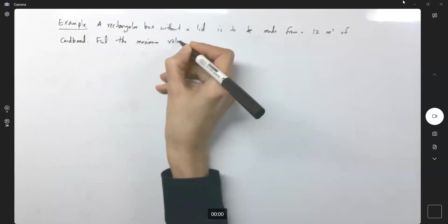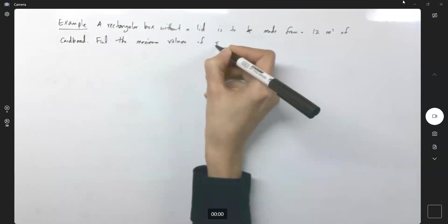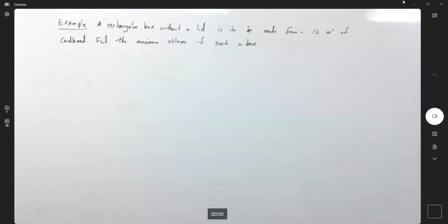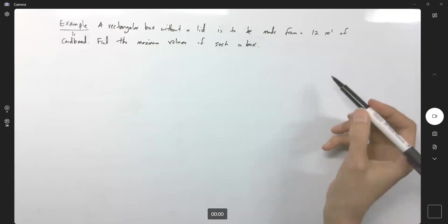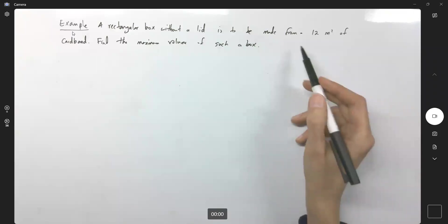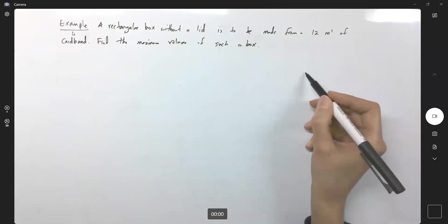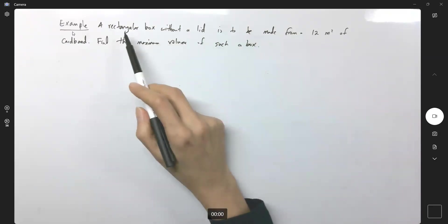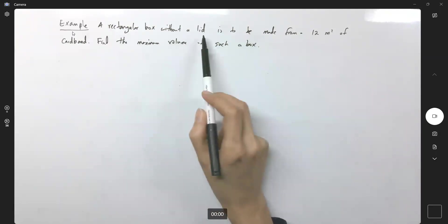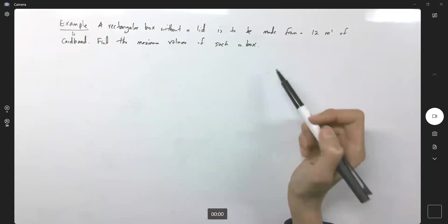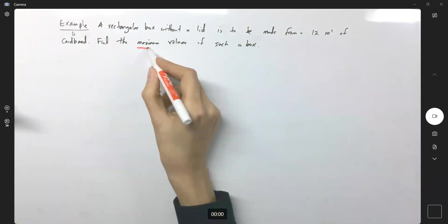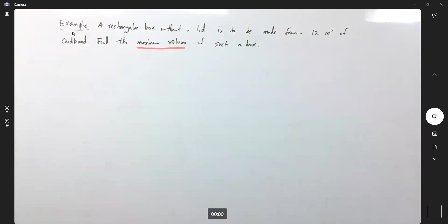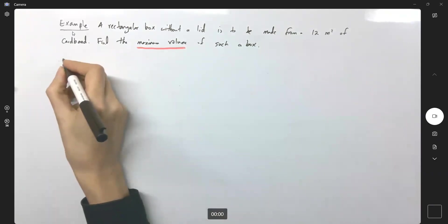Find the maximum volume of such a box. So we have a cardboard, and we try to form a rectangular box without a lid out of it. Our goal is to maximize the volume, so the volume needs to be maximized.